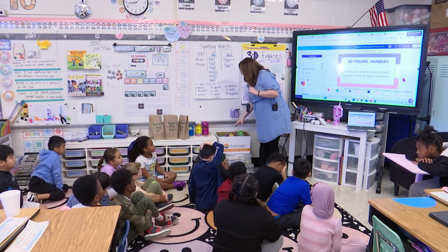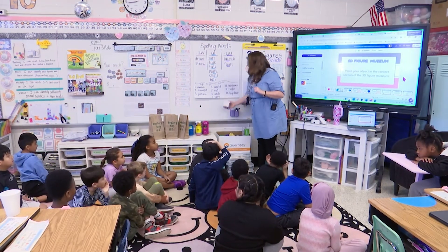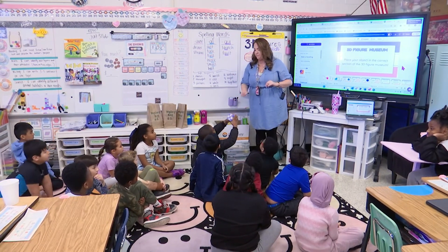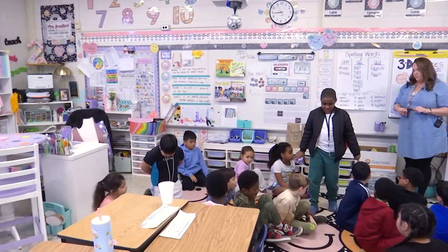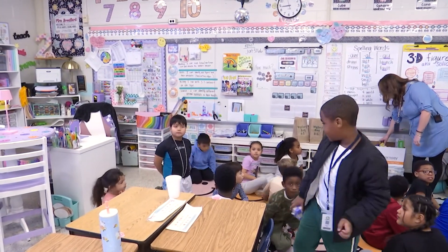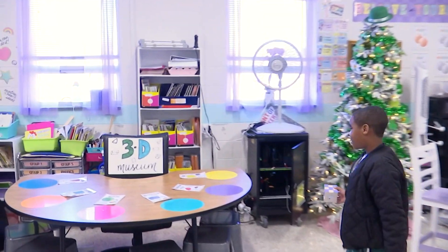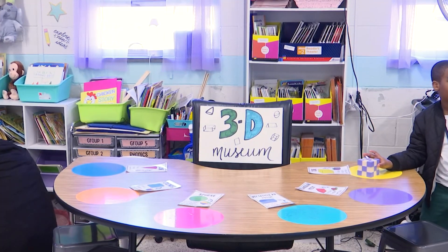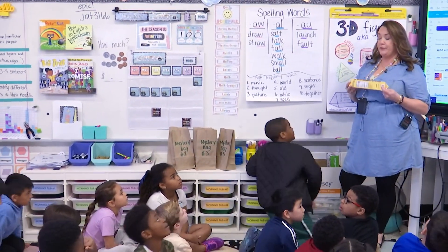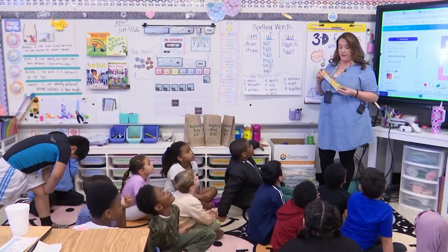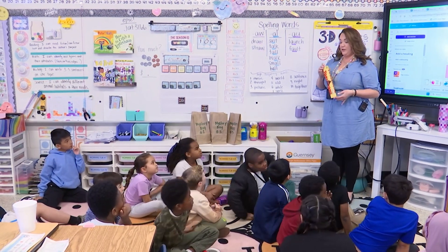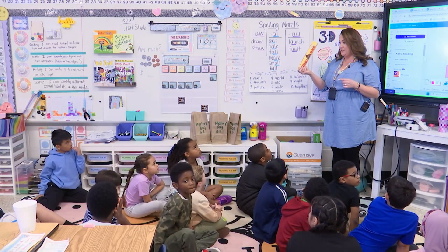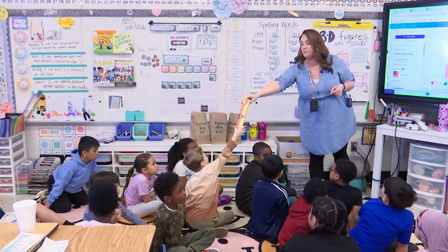Let's have Braylon Gray go first. Look at that object and go place it where you think. This might be the only 3D triangular prism I could find — they are hard to find. This is a Toblerone chocolate. Have you ever had this? It's a tricky one but it's the only triangular prism I could find. Finn, can you find where that one would go? Good job.